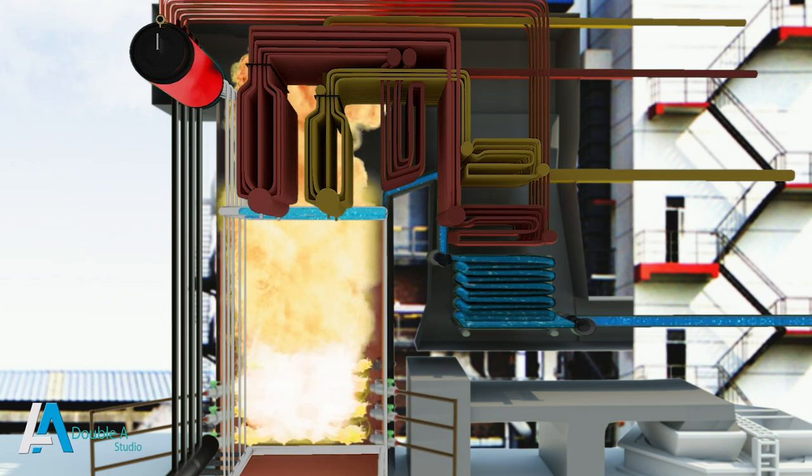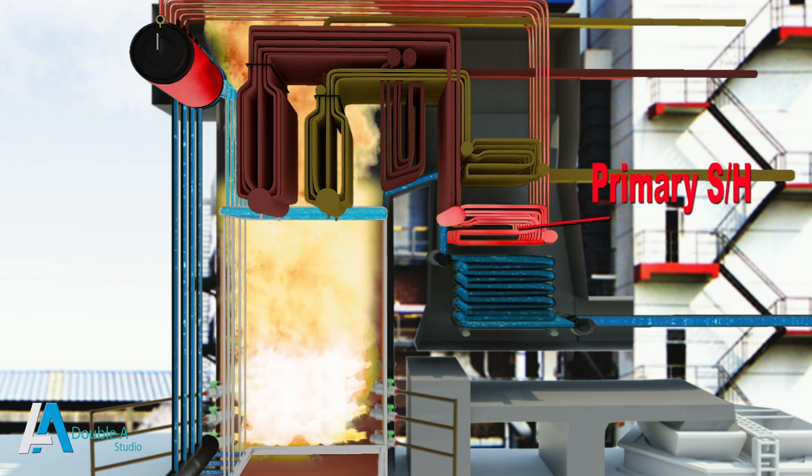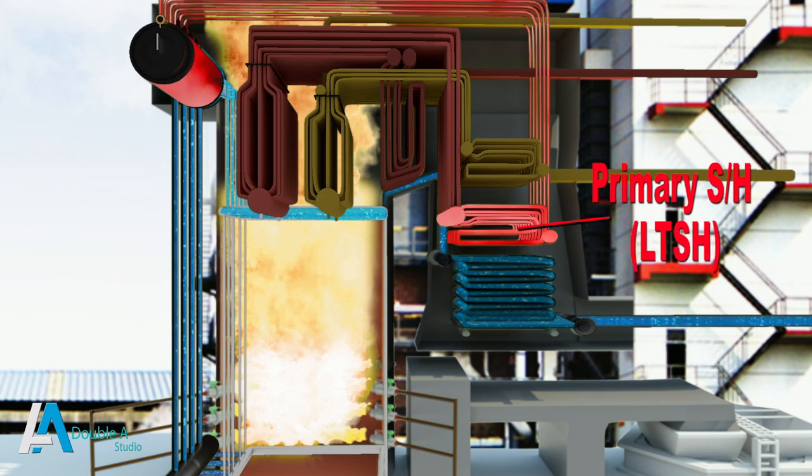Saturated steam coming out of the boiler drum first goes to the primary superheater located in the convection zone. This primary superheater is also called LTSH — that is, Low Temperature Superheater. The heat of the flue gases passing across it is absorbed by the LTSH, which in turn increases the temperature of steam inside the tubes.